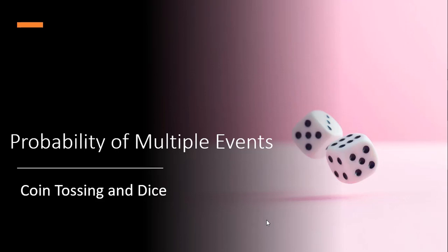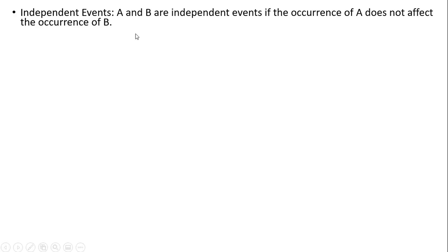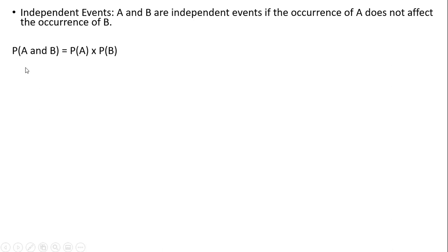We're going to look at the probability of multiple events using coin tossing and dice as our examples. We're going to be dealing with independent events. A and B are independent events if the occurrence of A does not affect the occurrence of B. For example, A could be rolling a die or flipping a coin — the result of the first flip or roll will not affect the second. The probability of A and B occurring is just the probability of A multiplied by the probability of B.